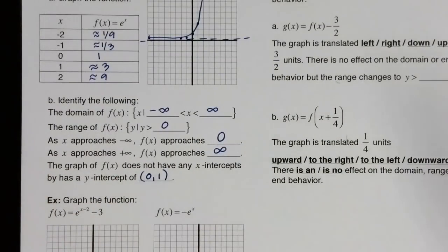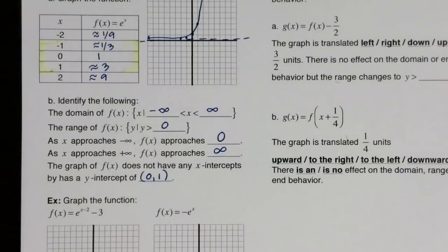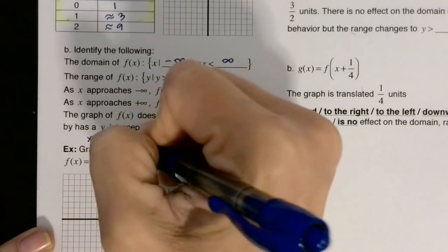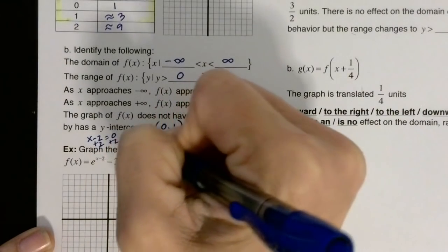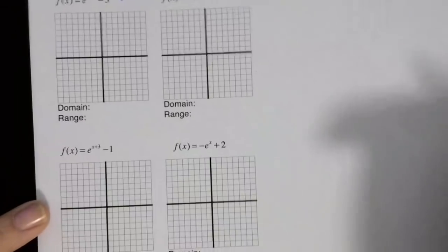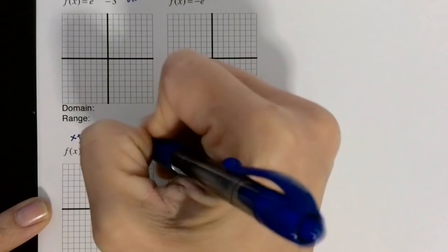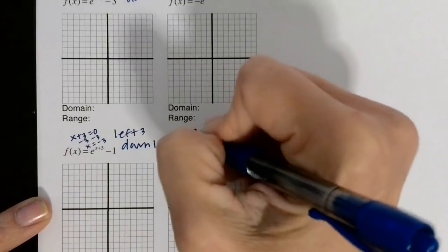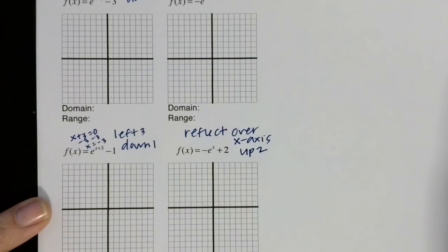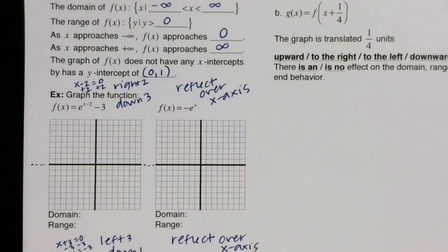Moving on, let's graph these guys. You're using these middle three values but keeping in mind the sharp turn that exponential graphs take. This one is going to go right 2 and down 3. This one is going to reflect over the x-axis. This one is going to go left 3 and down 1. And this guy is going to reflect over the x-axis and go up 2. They all have the same base, so they all have the same parent graph.